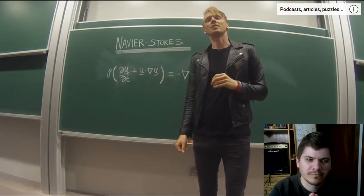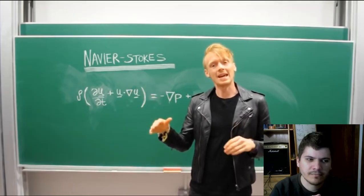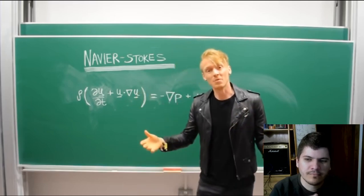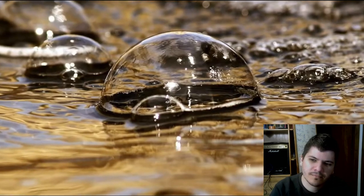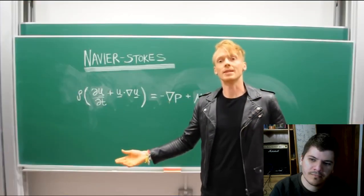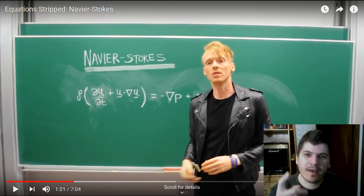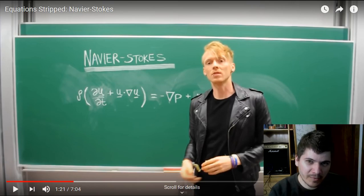I'm going to strip this equation down layer by layer. To begin with: what does it represent? The Navier-Stokes equation models the flow of a fluid — but not any fluid. Navier-Stokes is only applicable to incompressible and Newtonian fluids, so it's not any fluid.